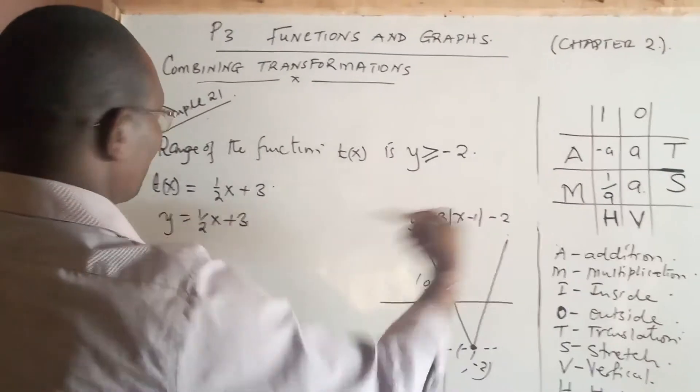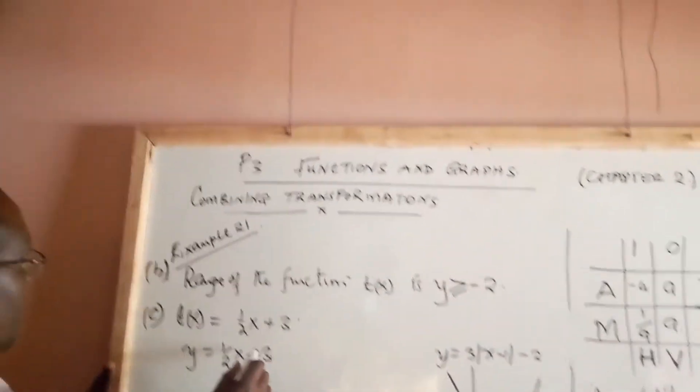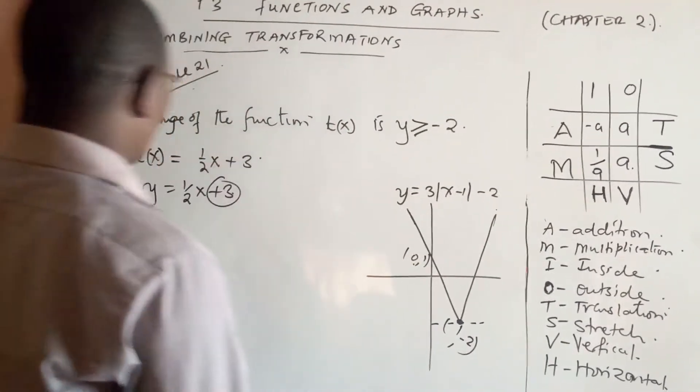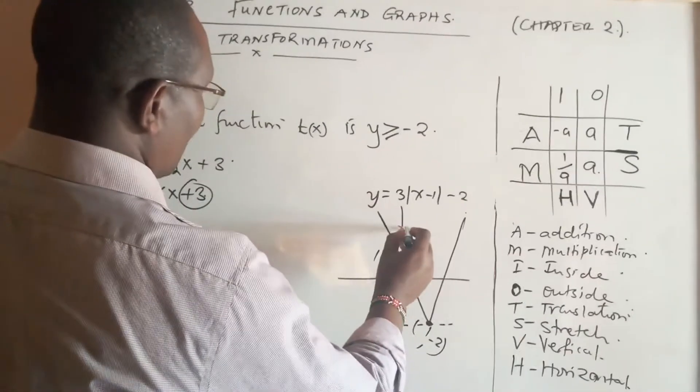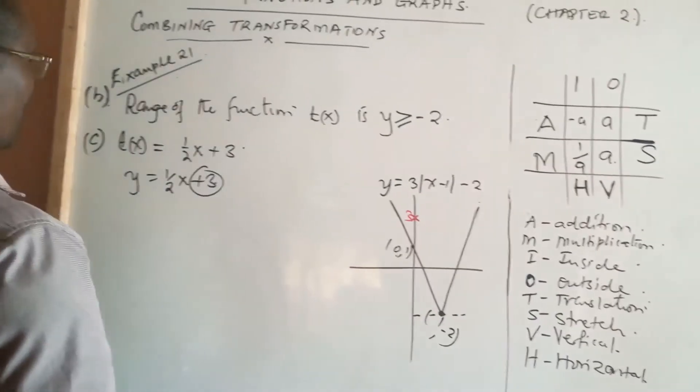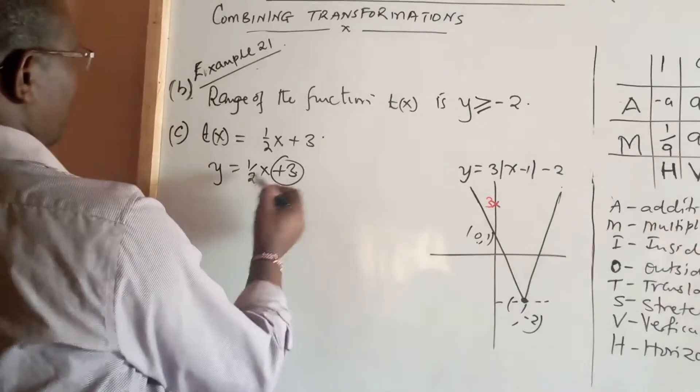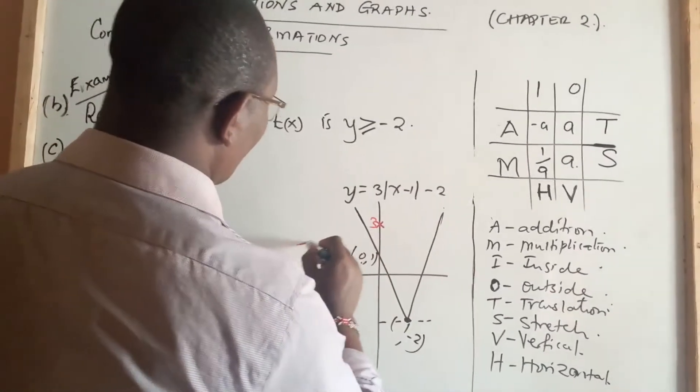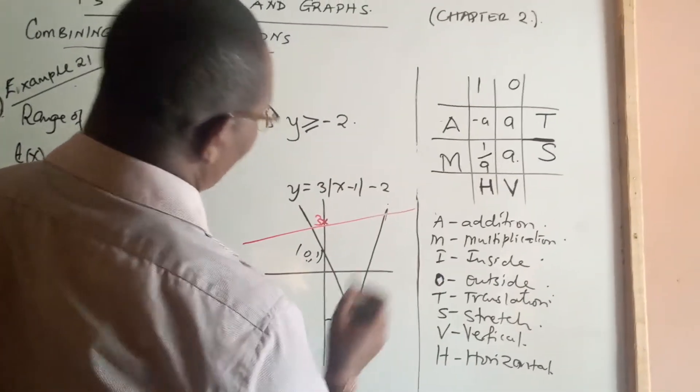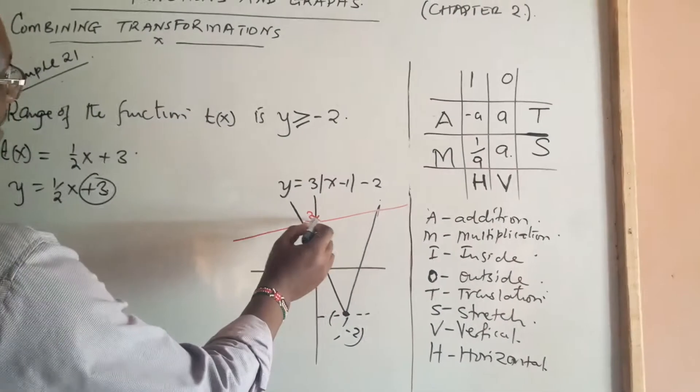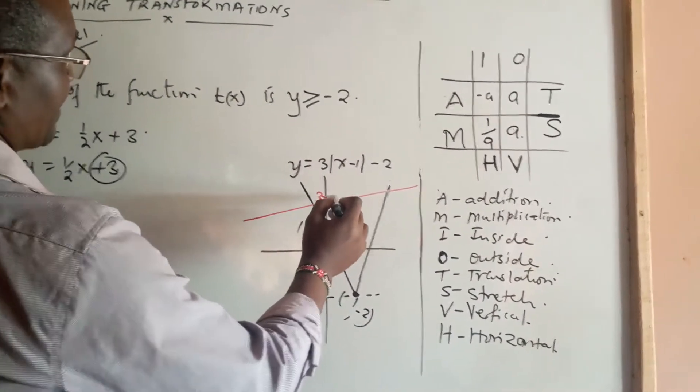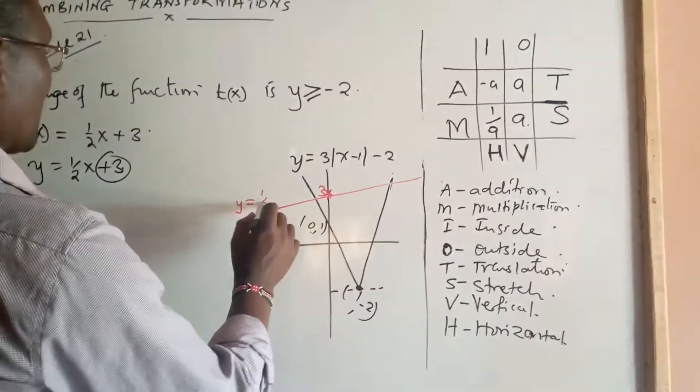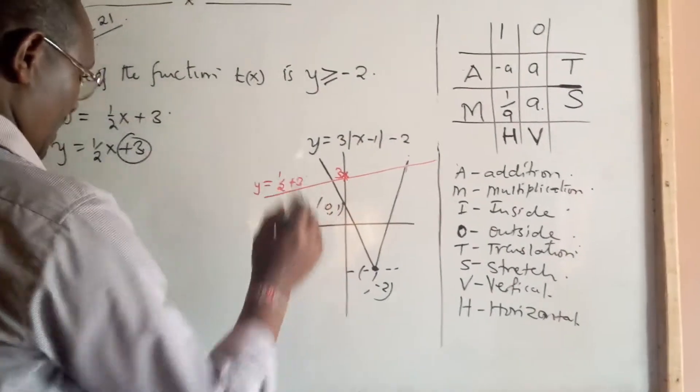If we construct the graph of y = (1/2)x + 3 in the same set of axes, we will see that the y-intercept will be 3, meaning the graph will cut the y-axis at point 3, and the graph will have a gradient of positive 1/2. It's going to cut the y-axis at 3, and this is the graph of y = (1/2)x + 3, the red part.